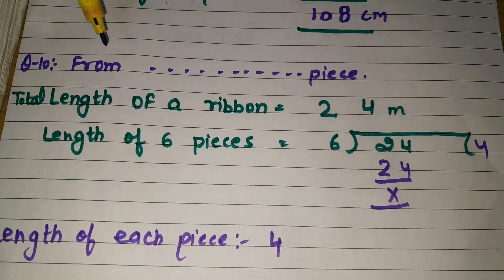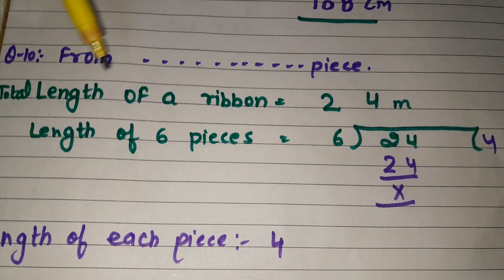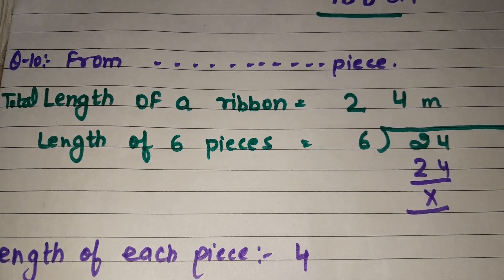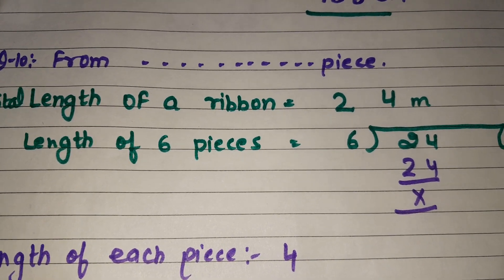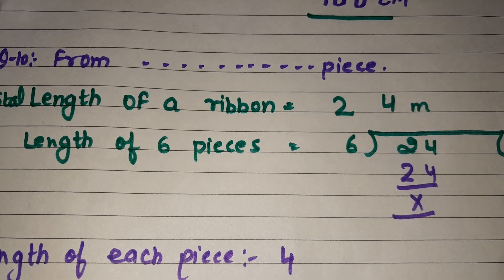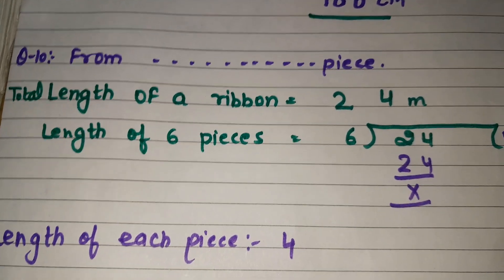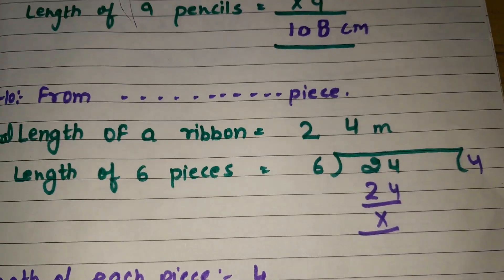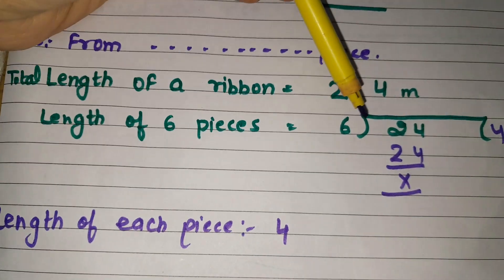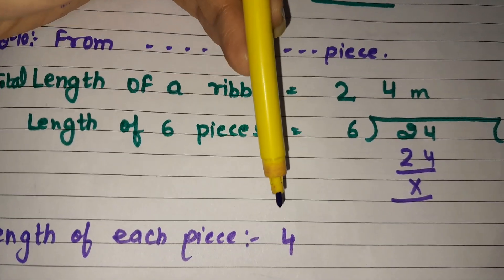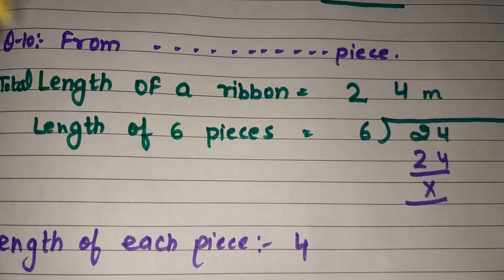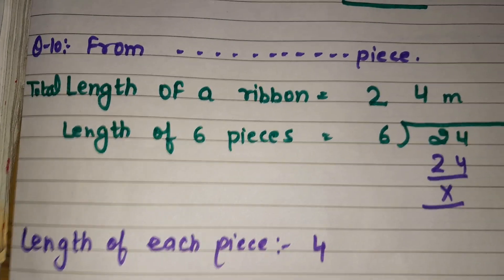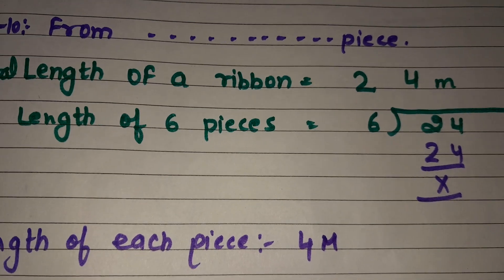We will write the question and answer. Total length of ribbon is 24 meters. Length of six pieces — we cut it into 6 pieces, so we will divide. 6 fours are 24, so each piece's length will be 4 meters.